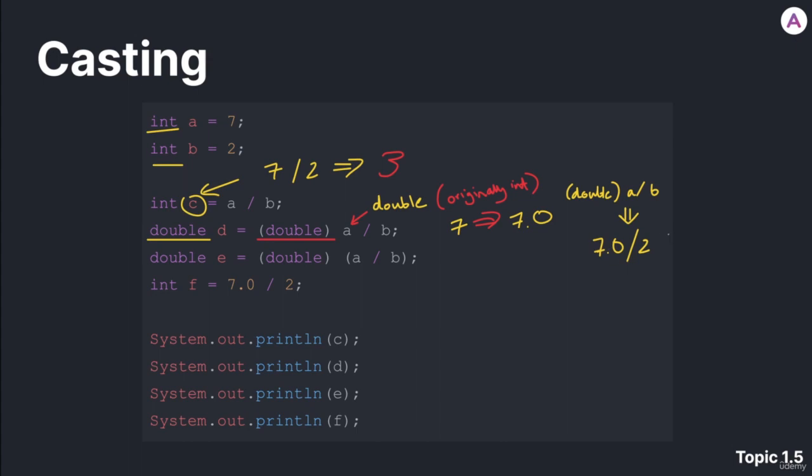And the answer to this, since this is a double, it is irrelevant that this is an integer. If any one term in this expression is a double, everything else is cast to a double.